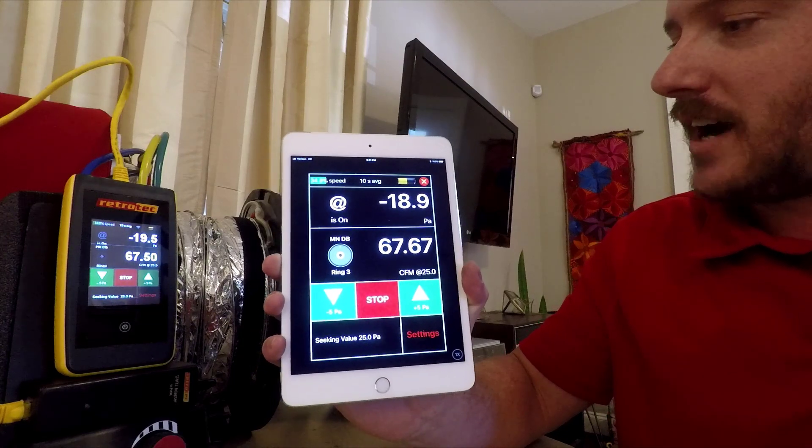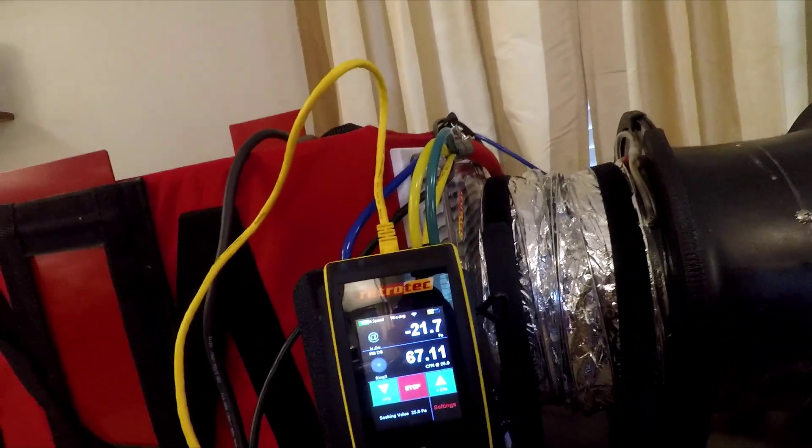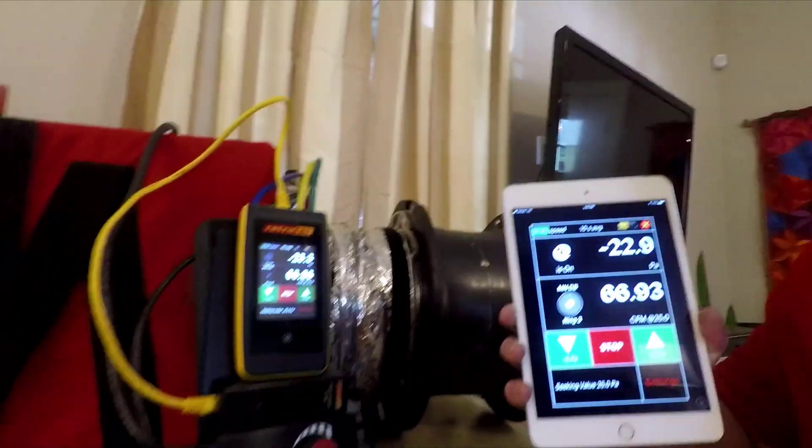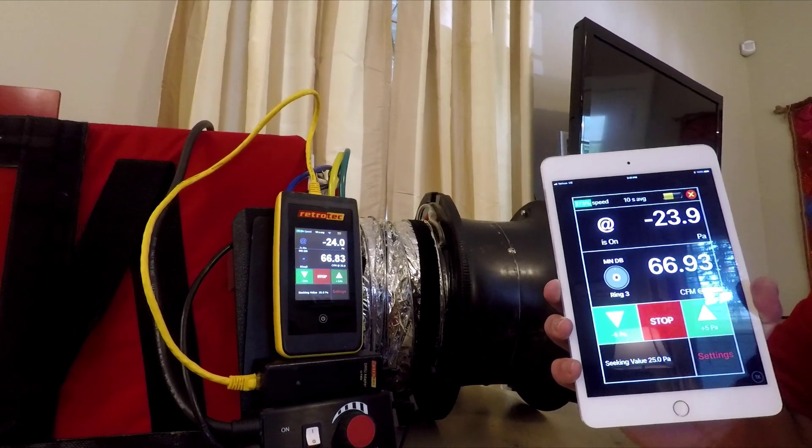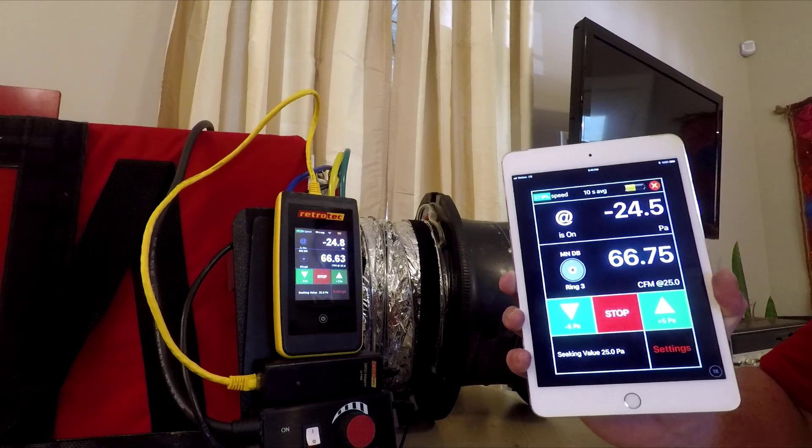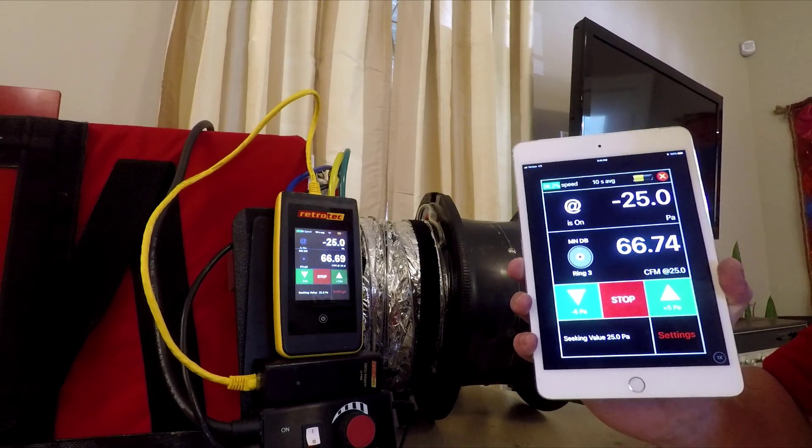We're set up to depressurize on this one. So you can see we have our three hoses hooked up. So we have to have that extra green hose hooked up to the flex where it connects up to the fan. So we'll let it get there. And so about 67 CFM leakage is what we're seeing.